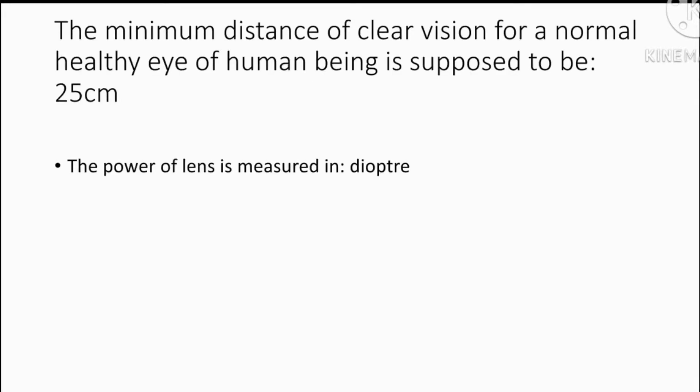The minimum distance of clear vision for a normal healthy eye of human being is supposed to be? The minimum distance of clear vision for a normal human in healthy eyes is 25 cm.